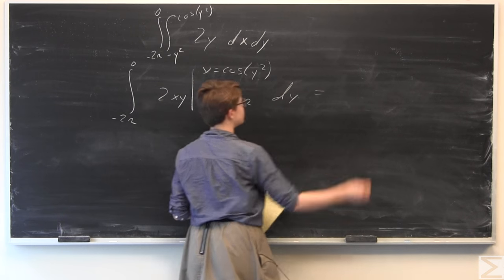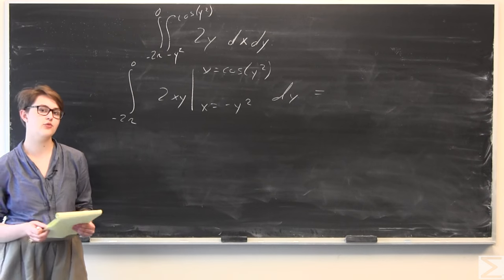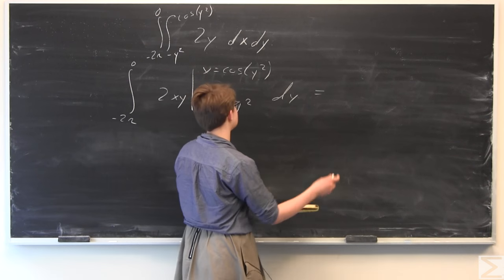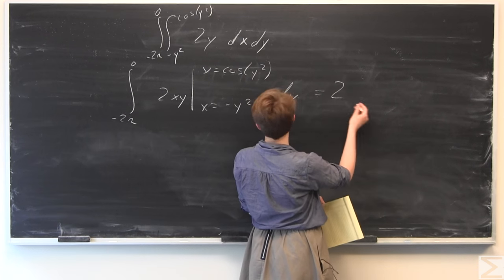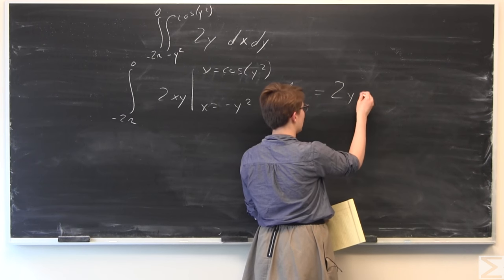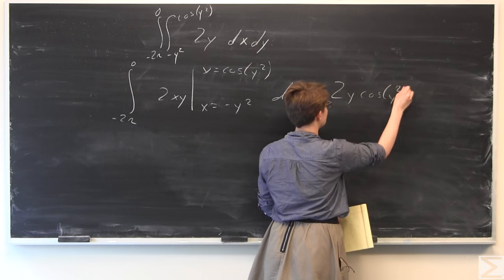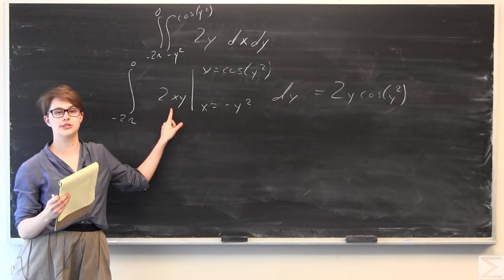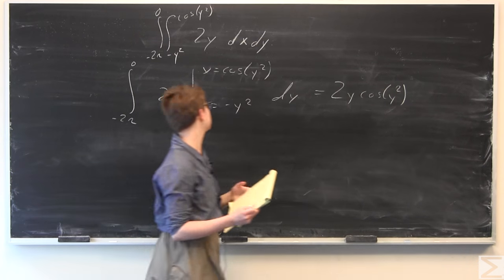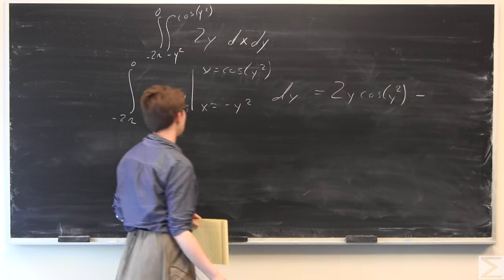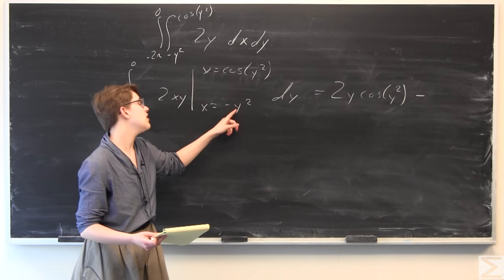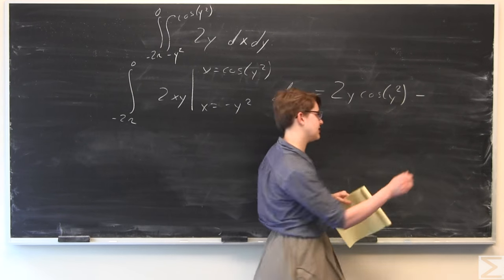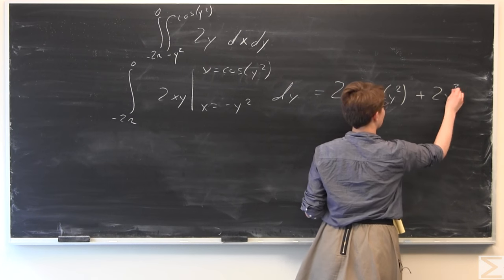We just need to plug in: everywhere we see an x, we plug in cosine of quantity y squared, and then subtract off plugging in negative y squared. So we get 2y cosine y squared as our first term. For the second term, we're plugging in negative y squared for x — we see a negative and a negative, so we make it positive — giving us 2y cubed.